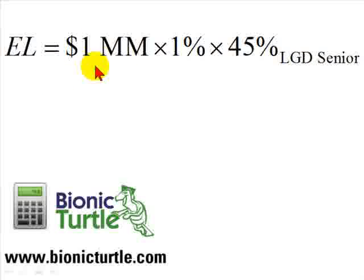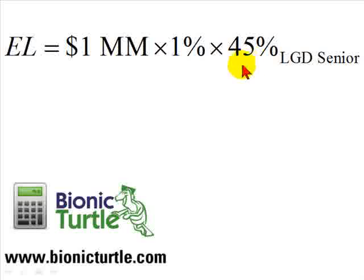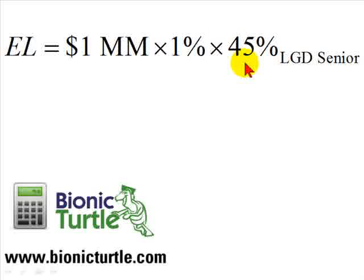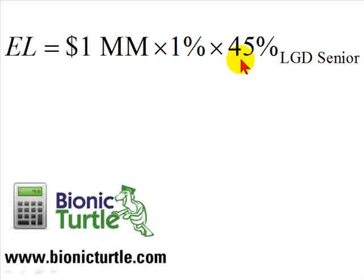For example, if the exposure is one million and the probability of default is one percent — let's say we're a bank applying Basel II under the foundation approach and the obligation refers to a senior corporate claim — we would use a loss given default of 45 percent. That means that 55 percent is the estimated recovery, and so on this exposure of one million, our expected loss is $4,500.